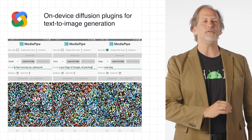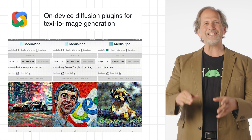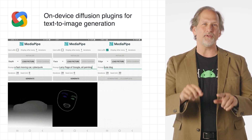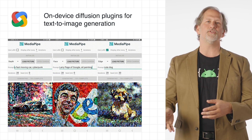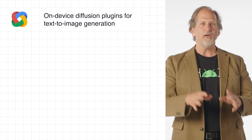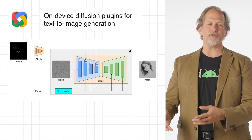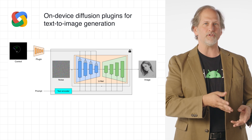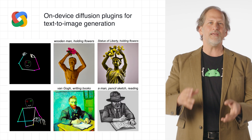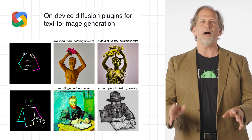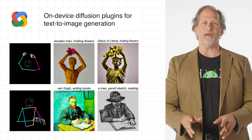We announced MediaPipe Diffusion plugins, enabling controllable text-to-image generation to be run on-device. Expanding upon our prior work on GPU inference for on-device large generative models, we introduced new low-cost solutions for controllable text-to-image generation that can be plugged into existing Diffusion models and their low-rank adaptation variants. By running text-to-image generation in plugins fully on-device, we enable more flexible applications of generative AI.